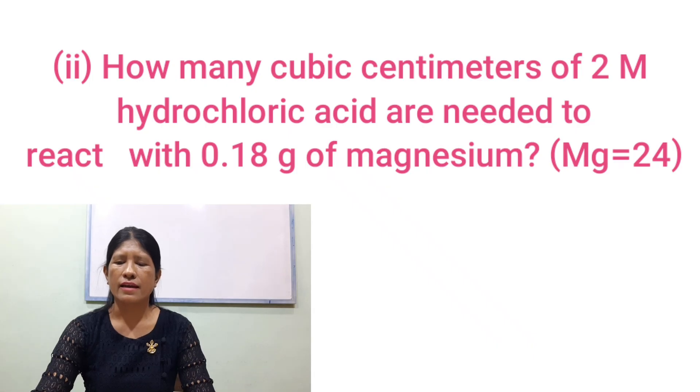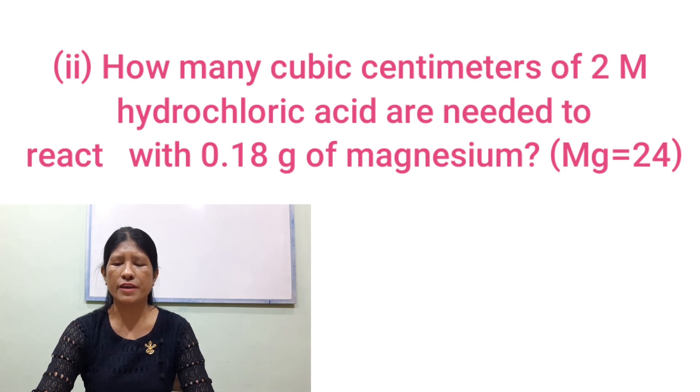How many cm³ of 2 molar hydrochloric acid are needed to react with 0.18 g of magnesium?